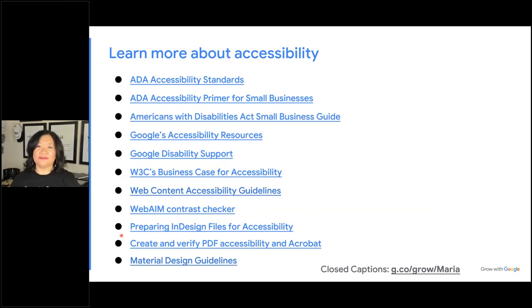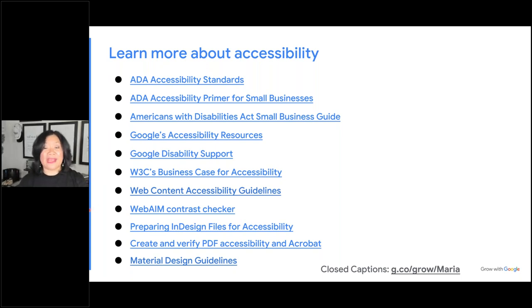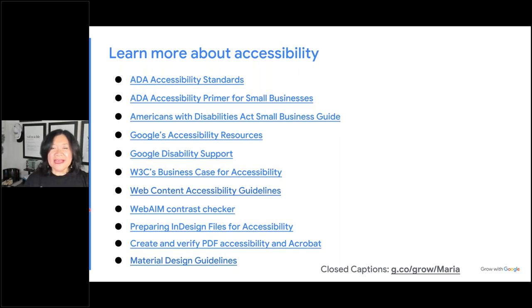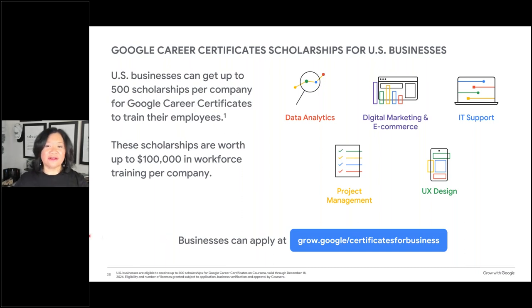Here's a screen with all the different accessibility information you can actually study. When you get a copy of today's slides, you'll be able to click on these. If you want to take a screenshot, you can do some research on your own. WebAIM — webaim.org — will actually walk you through whether or not your website and all your digital properties are accessible, and give you best practices and even more tools than what I've shared today. I just wanted to make sure you have the free tools accessible to you. Like I end every webinar, I always end with resources. There are also free certificates for businesses — these are scholarships free right now until 2023 — that you can take to become more educated on accessibility.